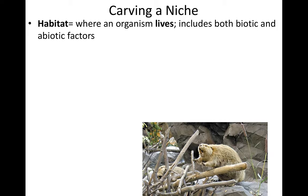First of all, we need to differentiate between habitat and niche. Habitat is where an organism actually lives, and it includes both biotic and abiotic factors in its environment. Biotic factors are living — they include plants, animals, decomposers, parasites, all of the living things in the environment. Whereas abiotic factors include things like sunlight, soil, water, carbon dioxide, and such.